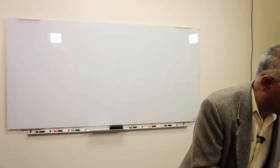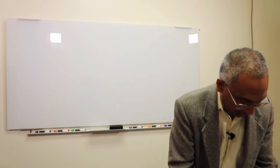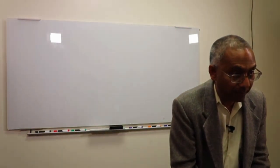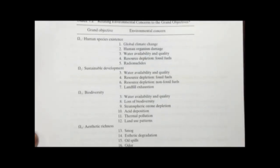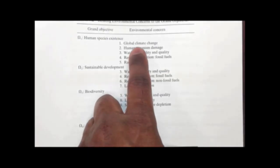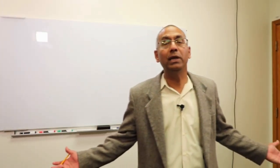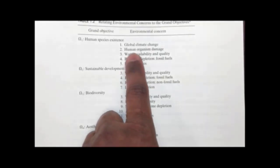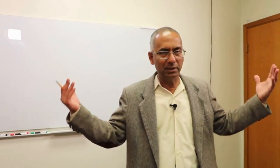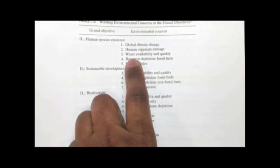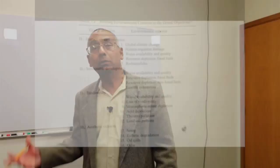For example, we said one of the main objectives is maintaining the existence of human species. Now, what stands in the way of realizing it? Well, global climate change can work against maintaining human species if earth becomes very inhospitable. Human organism damage, which means cellular damage that comes about by chemicals and radioactive stuff. Water availability, that could do it, right?